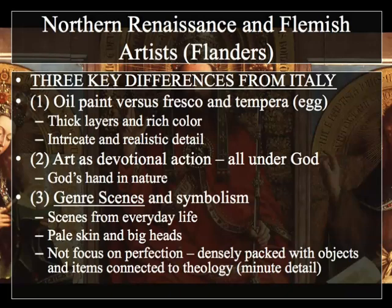We're also going to talk about the Northern Renaissance, which was occurring outside of Italy in Flanders. Three key differences from Italy: oil paint is used specifically by Northern Renaissance and Flemish artists versus fresco and tempera — because they want thick layers, rich color, and intricate and realistic detail. Art is specifically used as a devotional act under God and God's hand in nature. Finally, genre scenes and symbolism are scenes of everyday life into which biblical stories can be placed — you'll also see pale skin and crowded compositions, not necessarily focused on perfection.